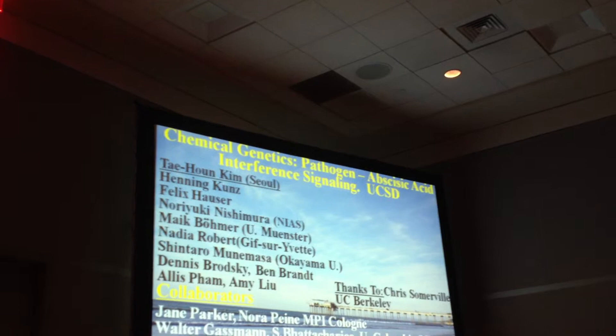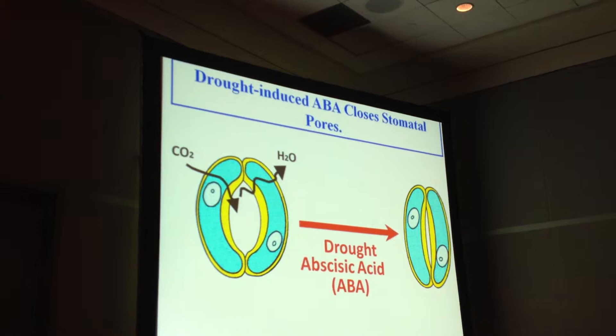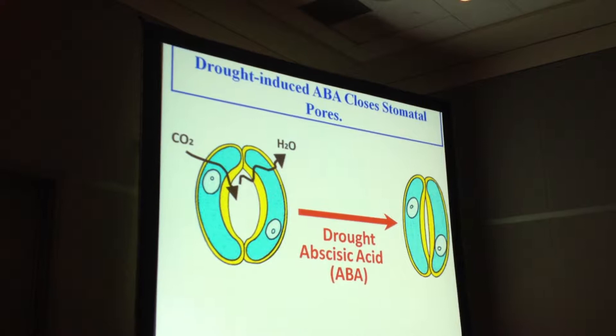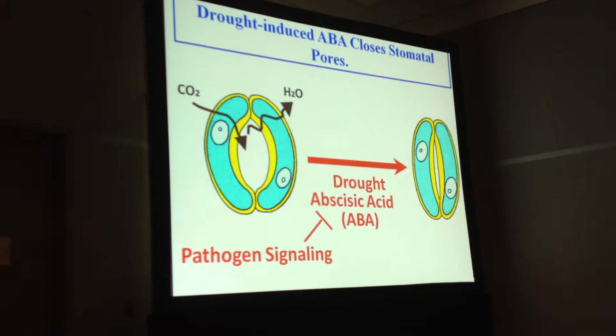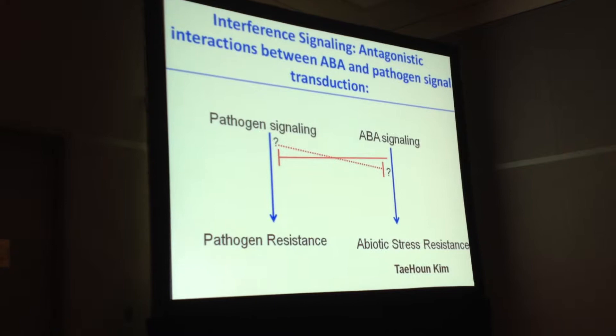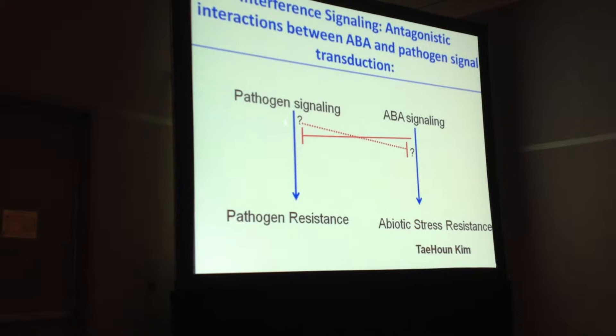We are interested in ABA signaling and regulation of gas exchange, using guard cells as a system to understand early ABA signaling mechanisms. Today I will talk about how intracellular effector-triggered immune signaling — ETI signaling — rapidly down-regulates ABA signaling. It has been shown by several laboratories that if you first stress a plant abiotically and turn on ABA signaling, that down-regulates pathogen-resistance signaling.